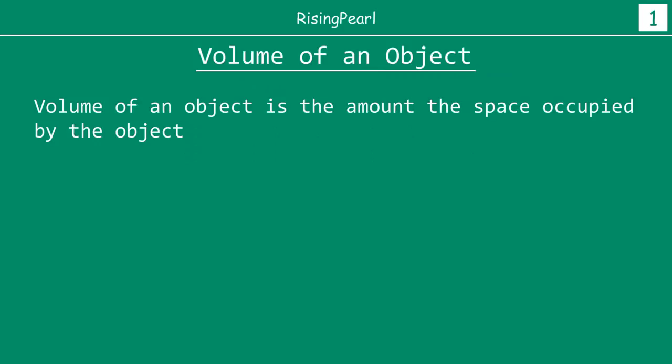Whenever we talk about volume of any object, regardless of its shape or size, what is important to note is that volume of any object is equal to the amount of space that is occupied by the object. This is how we define the volume of any object. Sometimes the object may be hollow or empty from inside.